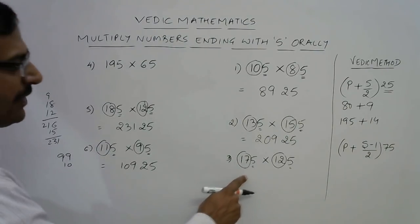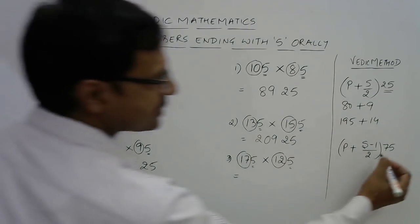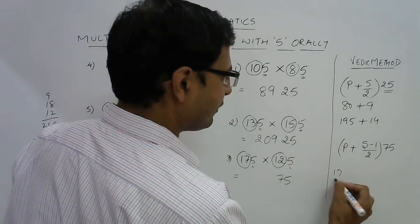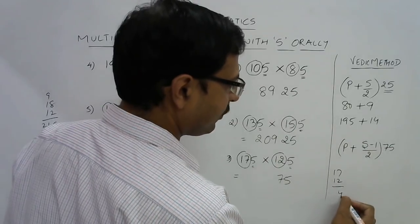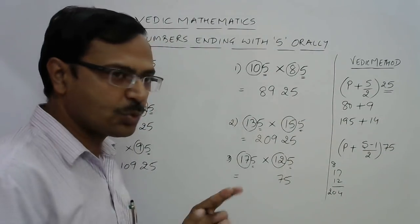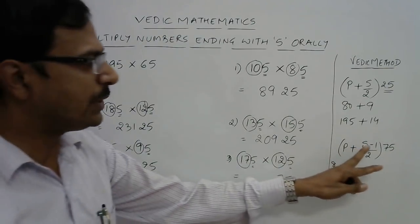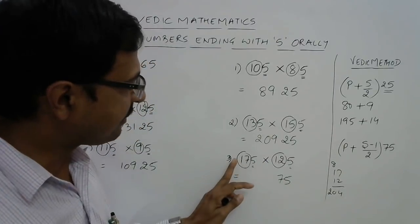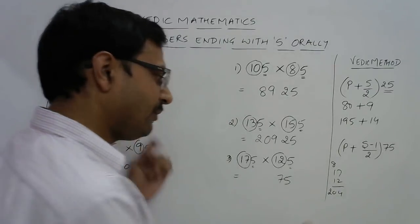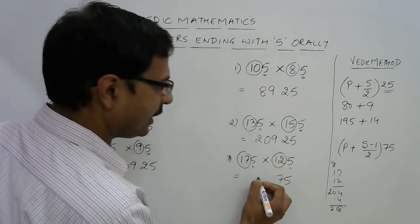175 and 125: 17 plus 12 is 29, which is odd, so our answer is going to end with 75. Now 17 multiplied by 12: 17 into 10 is 170, 17 into 2 is 34, so 204. Now, 17 plus 12 is 29, reduce that by 1 to get 28, divided by 2 which is 14. What is to be added is 218. So 21875 is the final product.